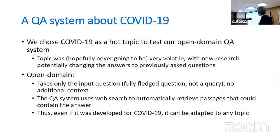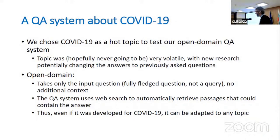For testing purposes, we had to choose one domain. One hot topic was the COVID-19 pandemic, and we chose that because the topic is very volatile. With new research, facts are changing. Well, hopefully they are not changing anymore, but in any case, it was a very interesting topic to test our QA system with.